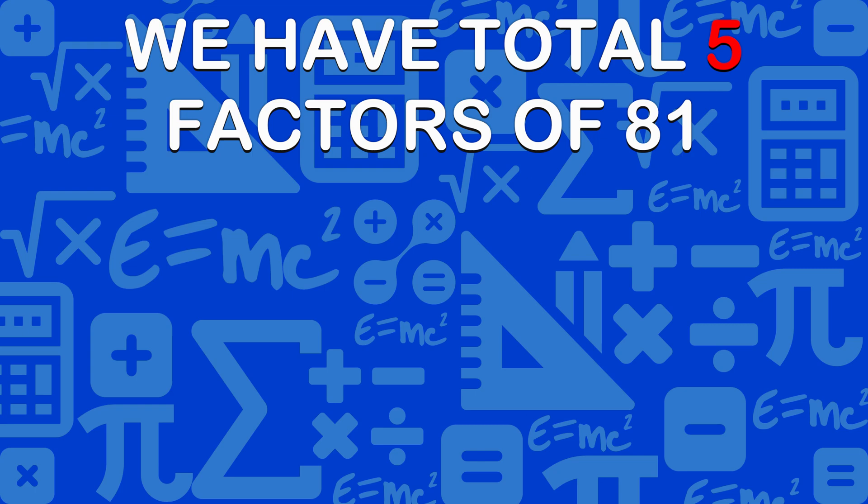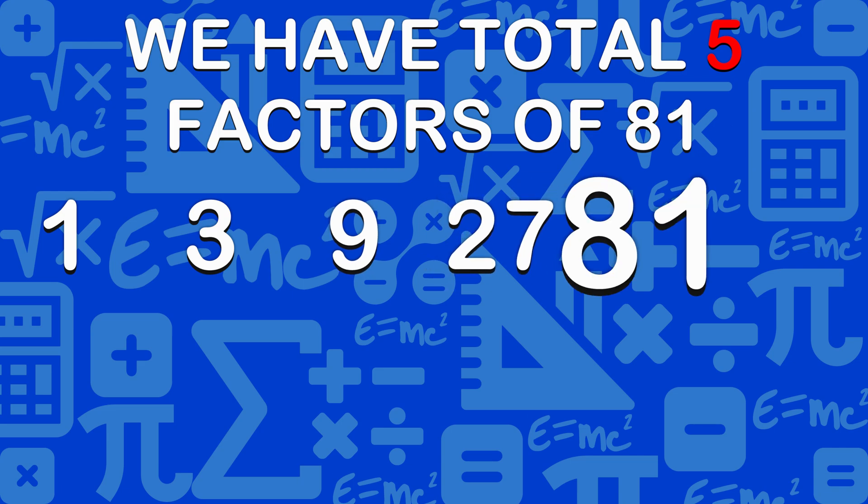We have a total of 5 factors of 81: 1, 3, 9, 27, and 81.